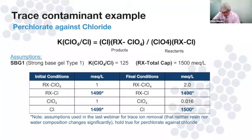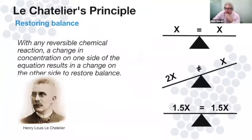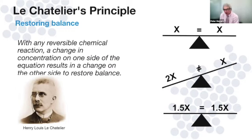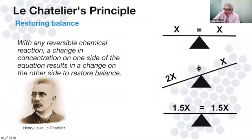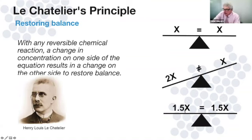Le Chatelier was a French chemist who developed the notion that in any reversible chemical reaction, if you load one side of the equation, you get a change on the other side to stay in balance. Using a fulcrum analogy: if we have X on one side and X on the other, we're in balance — but if we add another X on one side, it tips the scale and Le Chatelier's principle says we'll move some over to the other side to rebalance.